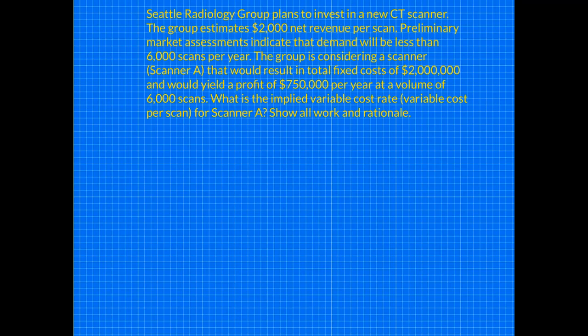Let's break down this question. It's really focusing around the total profit equation, which is total revenue minus total expense equals total profit — you might also hear net income used. Don't confuse revenue with how much money you're making in the end. Revenue is what you're collecting up front, then all the expenses come out of that revenue to give you your total profit.